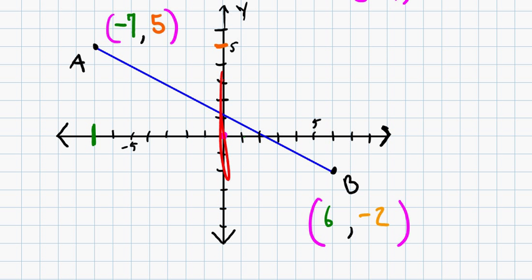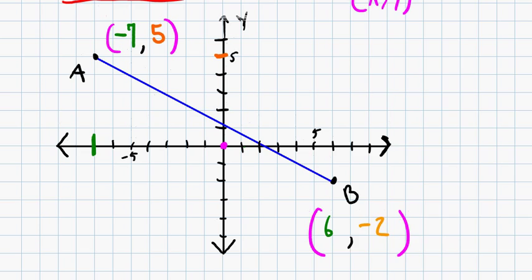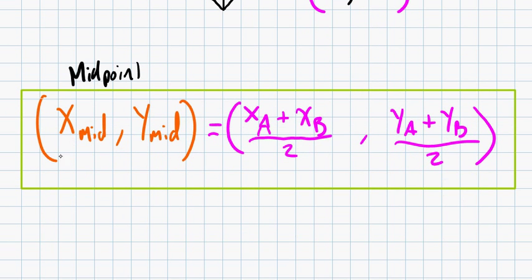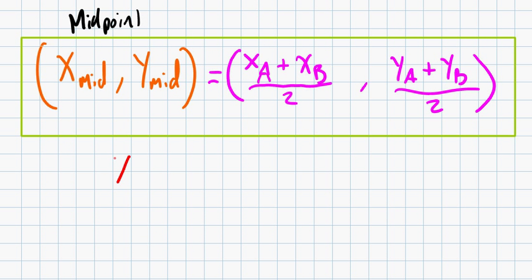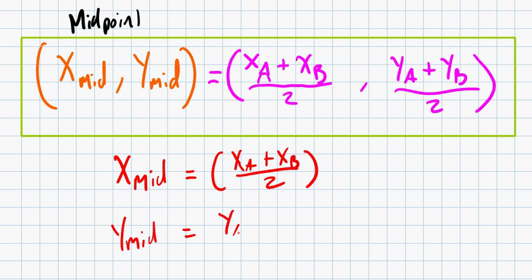And you can think of this as being two different equations if you'd like. If you want, you could always just say x_mid equals something, and y_mid equals something. And in this case, we'd have x_A plus x_B over 2, y_A plus y_B over 2. So long as you remember that these two values that you're creating are coordinates.